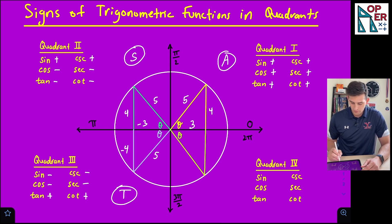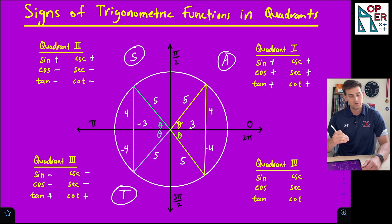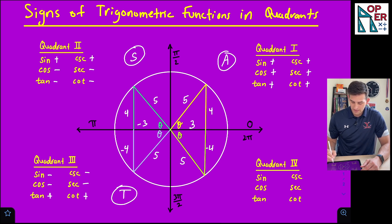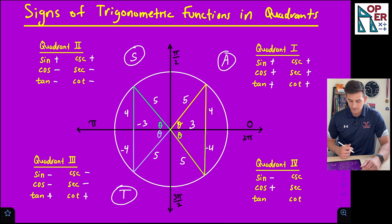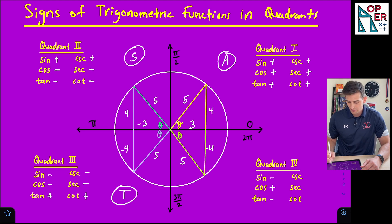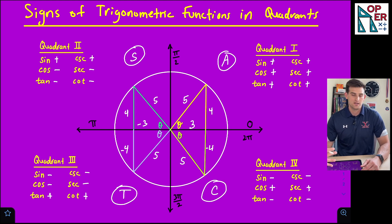Finally, quadrant four: three is positive, but four is negative because we are going down from the x-axis. Sine — opposite over hypotenuse — is negative four over five, so sine is negative. Cosine — adjacent over hypotenuse — is three over five, so cosine is positive. Tangent — opposite over adjacent — is negative over positive, so tangent is negative. The inverses follow: cosecant is negative, secant is positive, and cotangent is negative. So cosine is the only positive function in quadrant four.